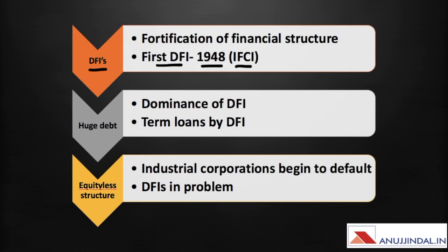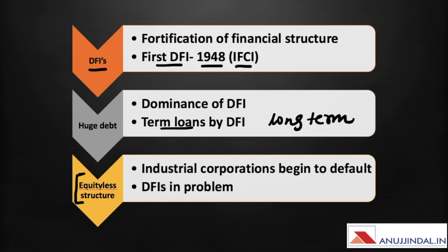In phase 3, IFCI was privatized and converted into a public company. The DFIs maintained a dominant position in the Indian financial system and were formed to give term loans — that is, long-term loans — to industrial enterprises. As more and more DFIs lent to industrial enterprises, the capital structure of those enterprises became full of debt, resulting in an equity-less structure with no trading on equity.